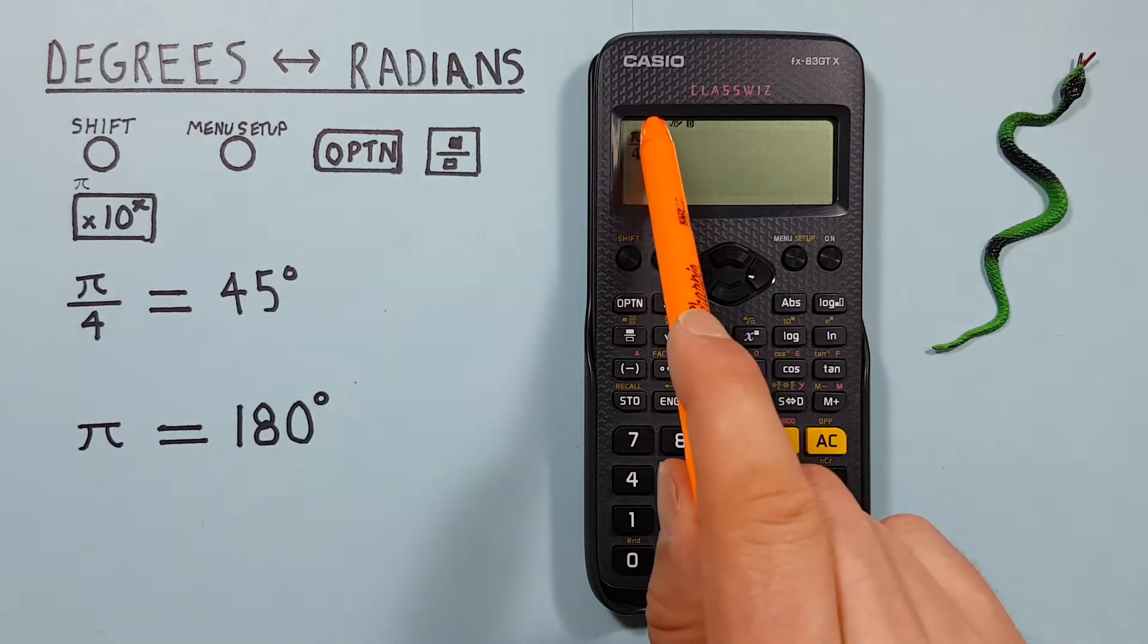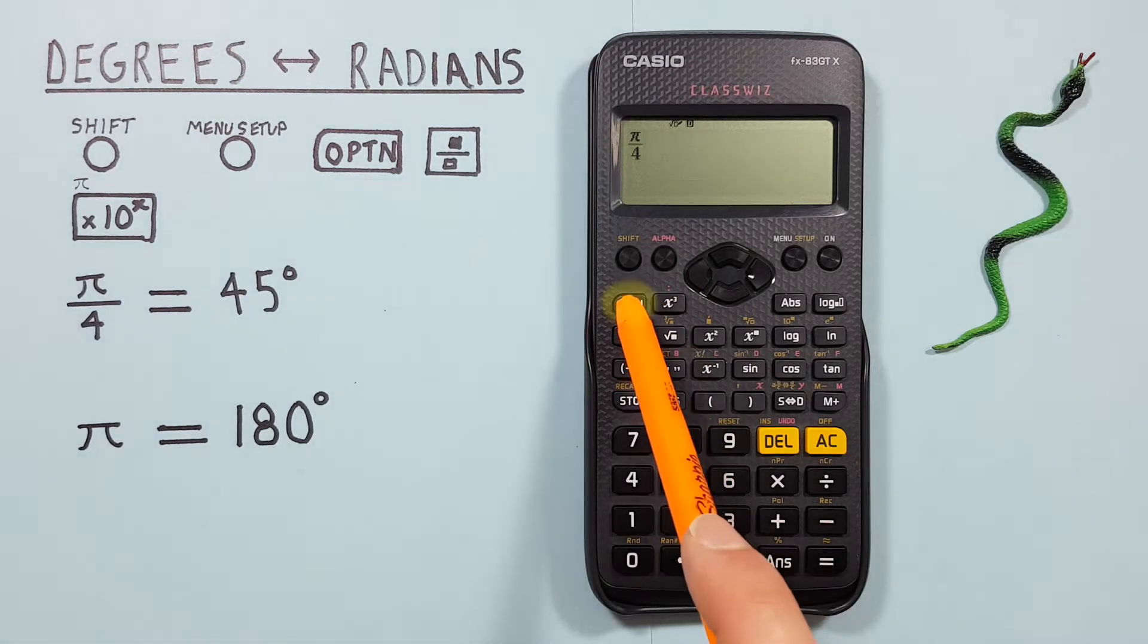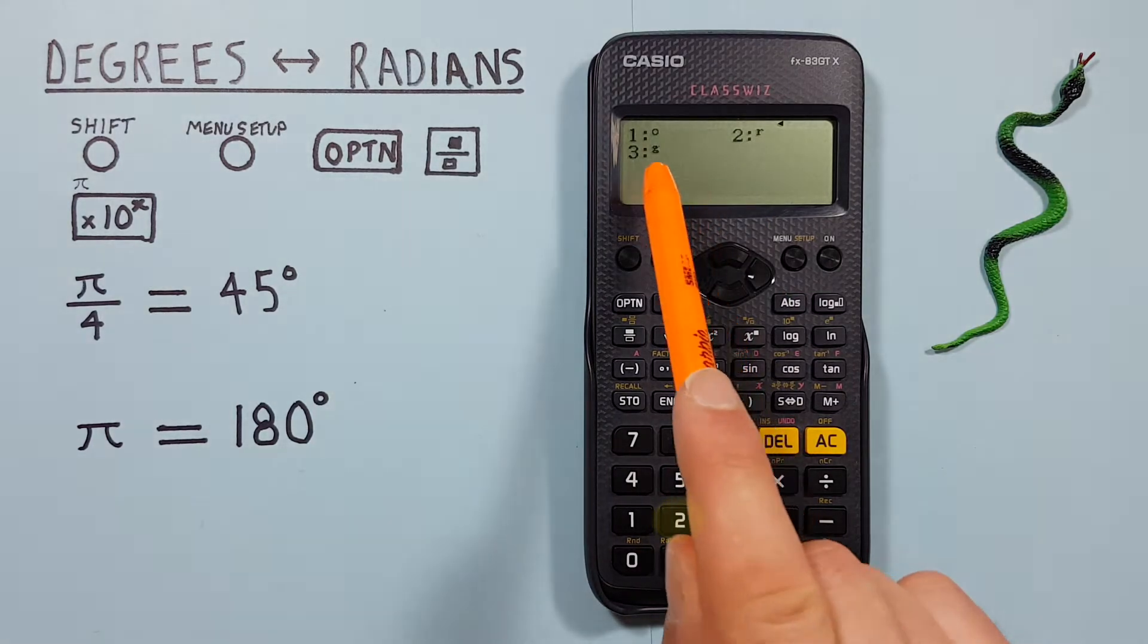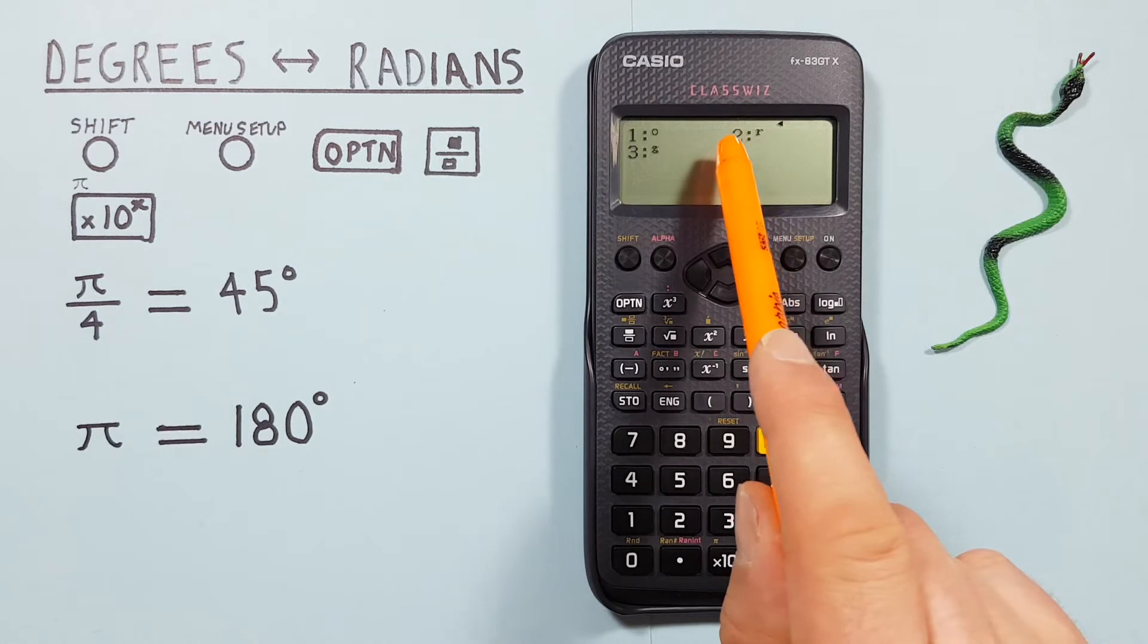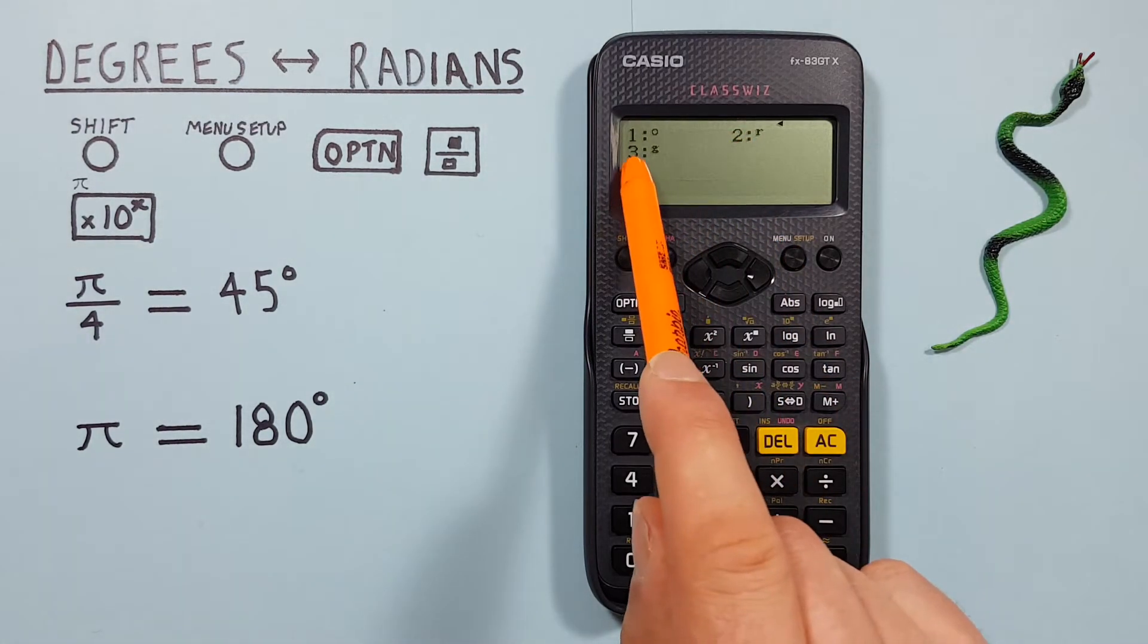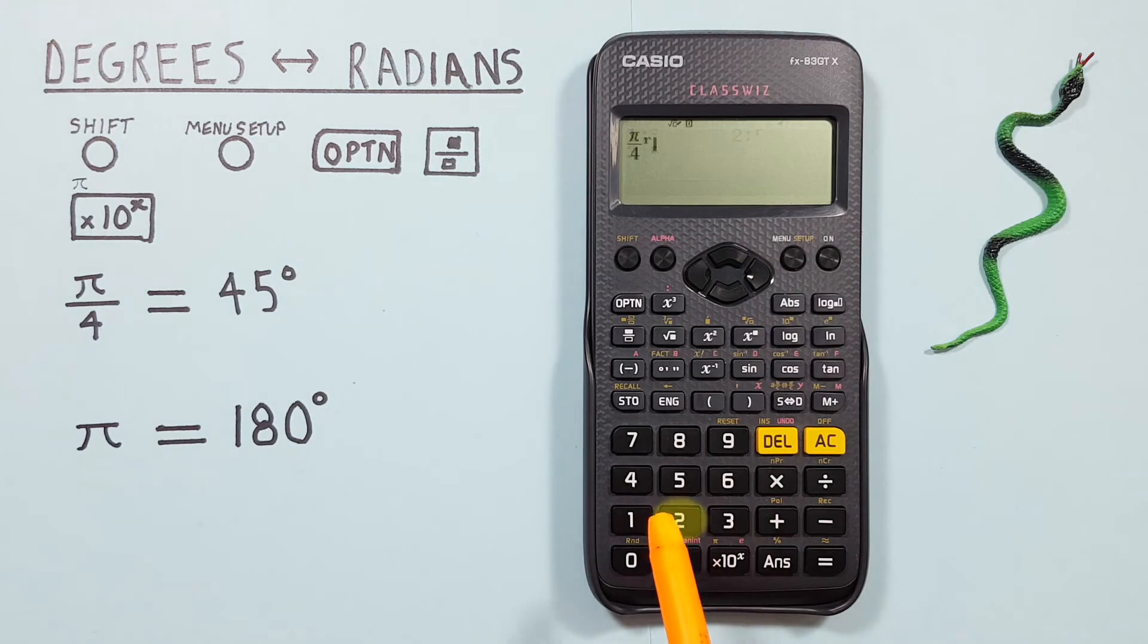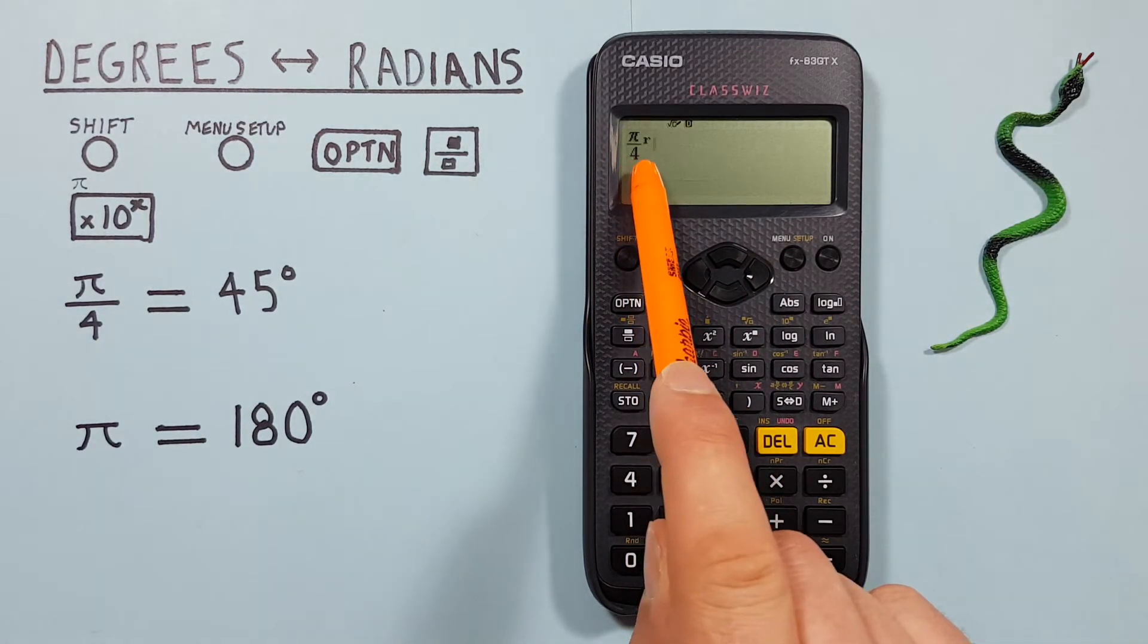Now we need to tell our calculator this is radians. So to do that, we press the Option key, select number 2 Angle Unit. And here we see number 1 the degree symbol, number 2 the radian symbol, and number 3 the gradient symbol. So since what we entered was radians, we select number 2. There we go. We now have π over 4 radians.